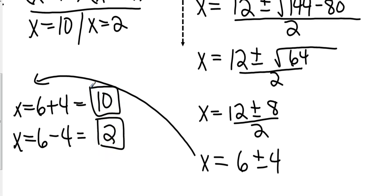So that's two equations. I've got x equals 6 plus 4, and I have x equals 6 minus 4. 6 plus 4 is 10, and 6 minus 4 is 2. Guess what? Same factors. 10 and 2. Quadratic formula works, finding out what a, b, and c are, substituting them in, and getting our factors at the end.